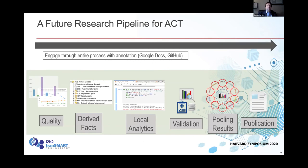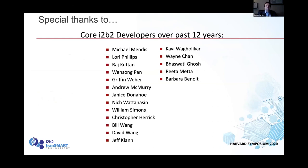So just reiterating — what we're looking at here is a new method where we go from quality checks to deriving facts on quality data, then we do local analytics on those derived facts, then we do the validation that Jeff described to make sure we've correlated with reality, which is important with EHR data. Then we pull the results and do the publication. Thank you — we finished on time.